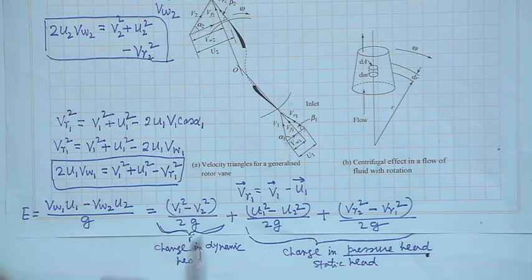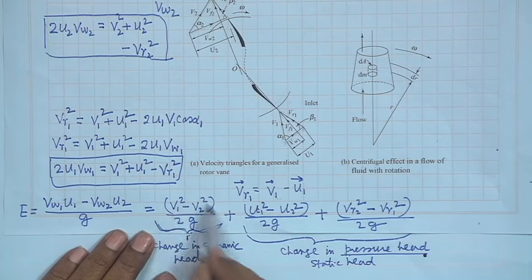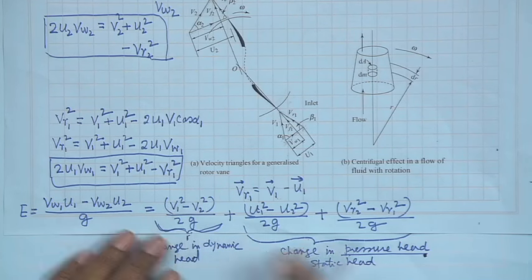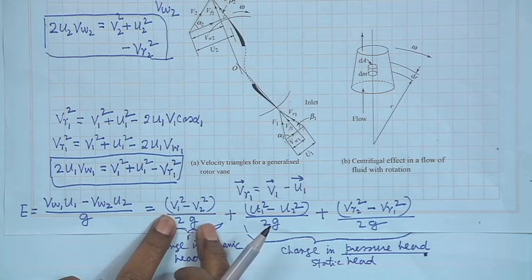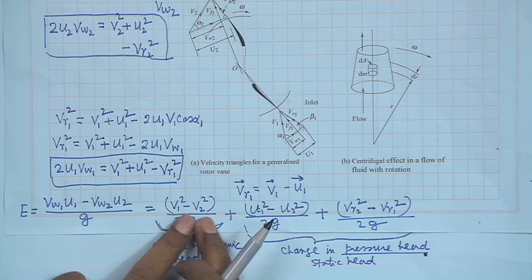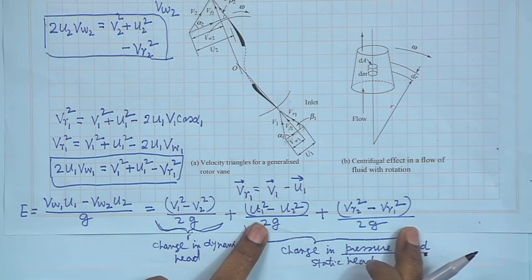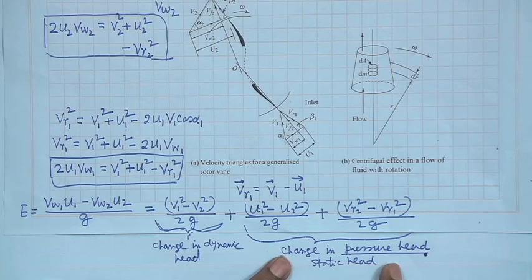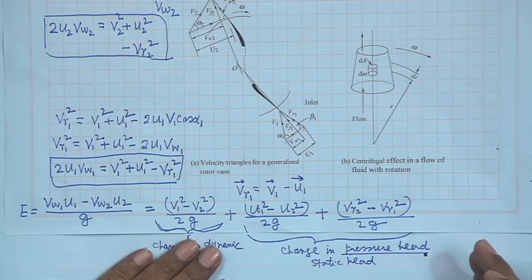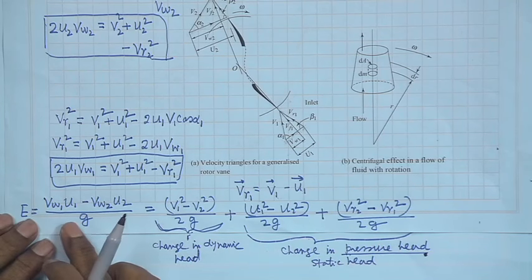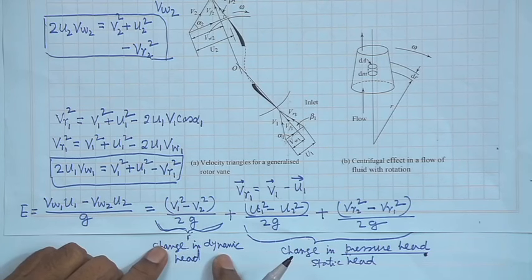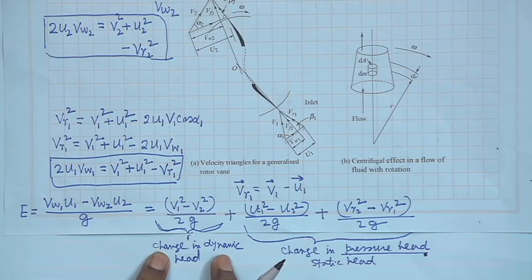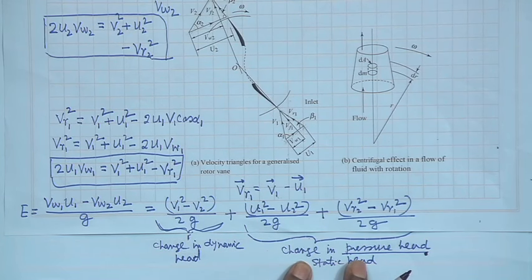When the fluid delivers energy, it changes its kinetic energy and simultaneously changes its pressure. The pressure is reduced and kinetic energy is reduced — the term (V1² − V2²) is positive since V1 > V2, and the static head term is also positive, so the fluid releases pressure. In the other way, when the fluid gains energy, it gains in the form of dynamic head and also in the form of pressure or static head.